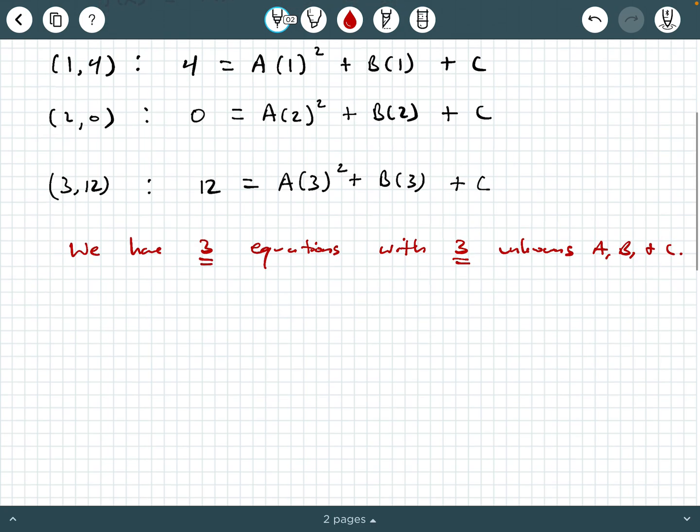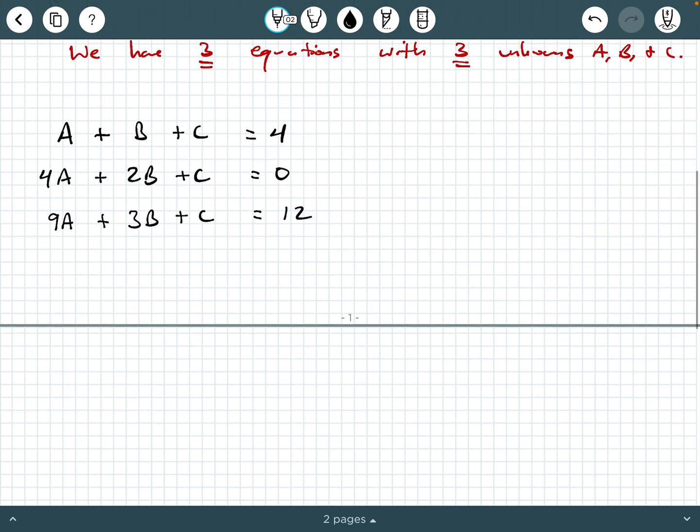So let's rewrite these three equations in a little bit more compact manner. So we would say the first equation is really just A + B + C = 4. The second equation would be 4A + 2B + C = 0. And then the third equation is 9A + 3B + C = 12. So I just evaluated those constant terms there.